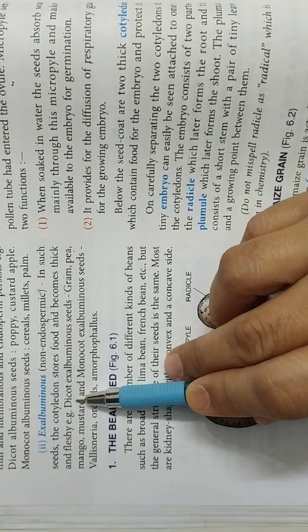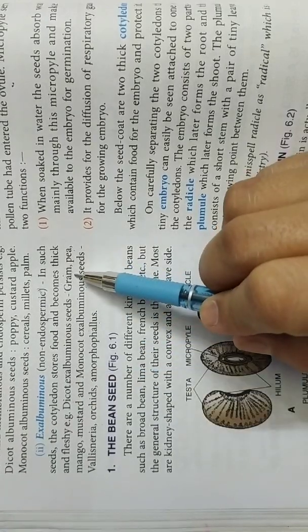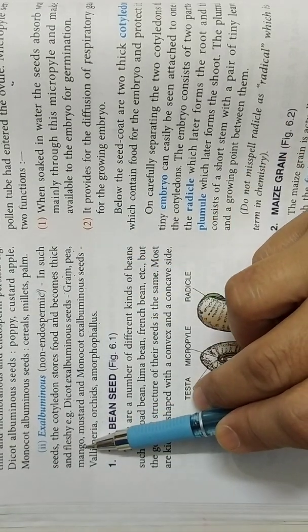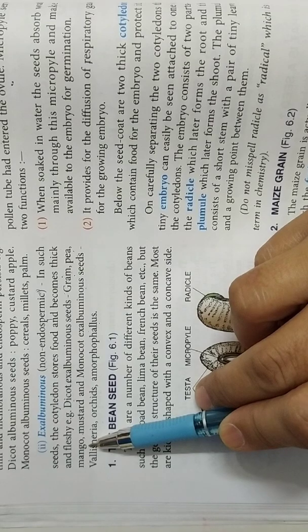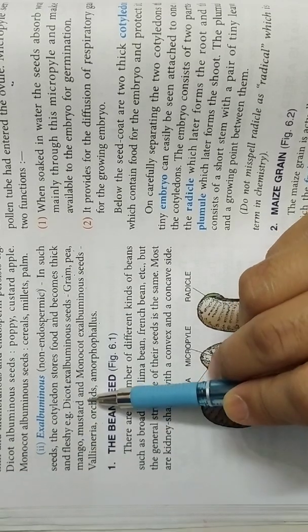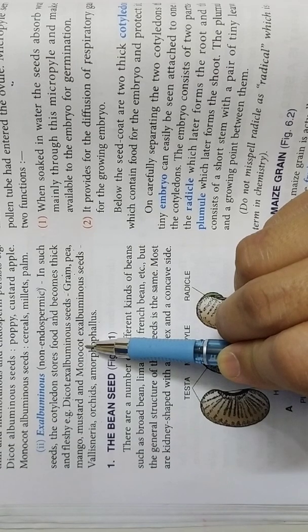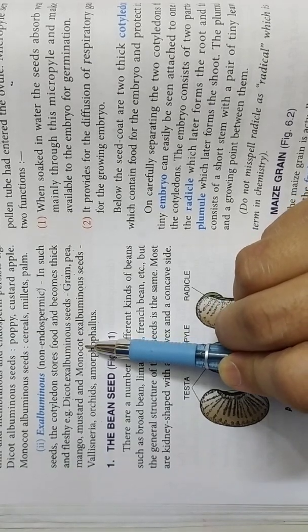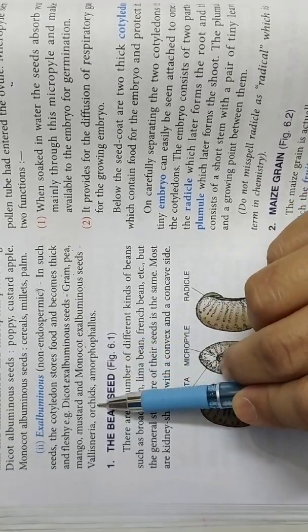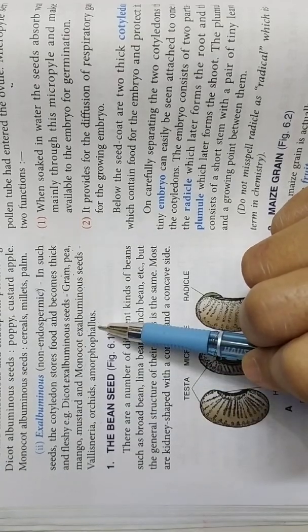For example in dicots, means that there are two cotyledons, such as grams and peas, mango. You might have seen raw mango inside the seed, you can easily find two cotyledons. Mustard and monocot. In monocot plants which have only one cotyledon, they may also store the, means there will not be any endosperm but cotyledon will store the food. For example Vallisneria, orchids, Amorphophallus.